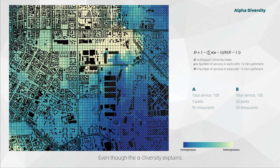Even though the alpha diversity explains the degree of service balance, it considers only the value in one cell independently, rather than globally. So, if one cell contains fewer values, it is more possible to have higher homogeneity. To solve this contradiction, we introduce the beta diversity.